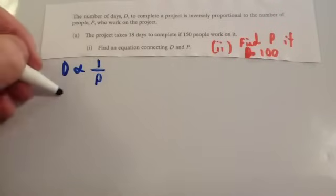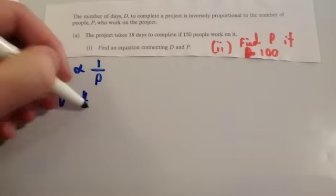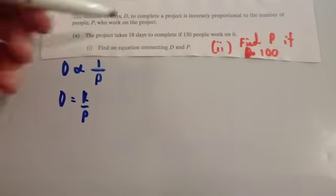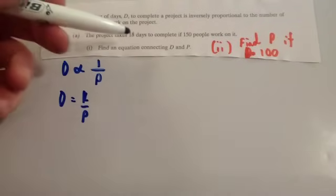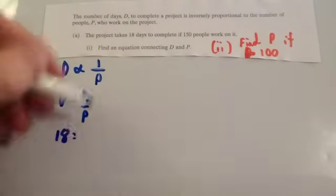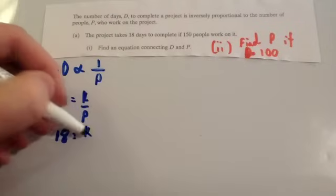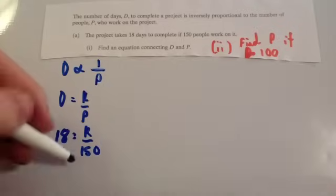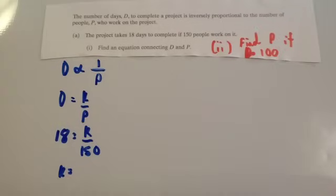Get rid of the proportional sign. So, D is equal to K over P. And then 18 days to complete if 150 people work on it. So, K over 150. So, then times 150 to find K. So, feel free to use your calculator to do that. So, 150 times 18 is equal to 2,700.